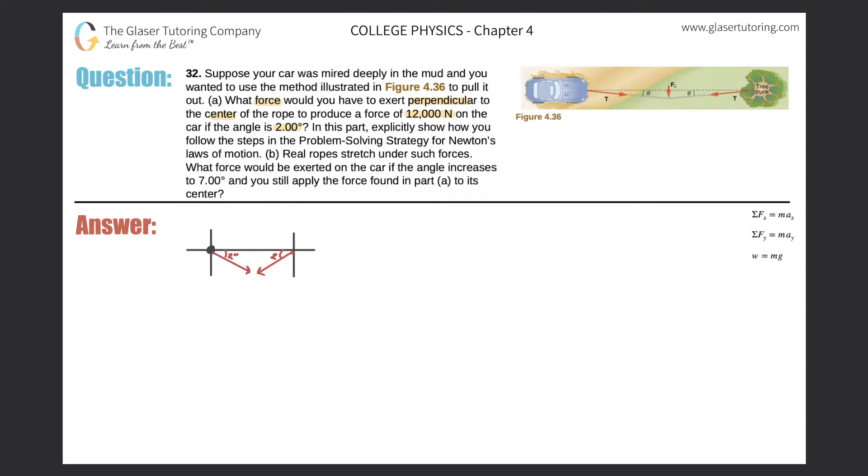Now there is some force here, it's called T in the problem. But do we know what it is? Well, we kind of do, because it says, if you read it carefully, what force must you exert perpendicular to the center of the rope to produce a force of 12,000 newtons on the car? So this T value here is actually 12,000. So I do know that. So instead of calling it T, I'm going to call it 12,000. And if there's a 12,000 newton force here, then there must be an equal but opposite force on the tree trunk of 12,000.